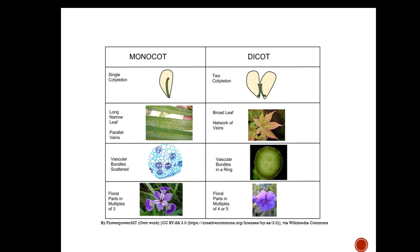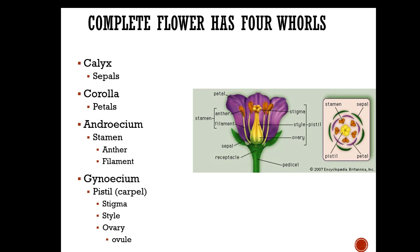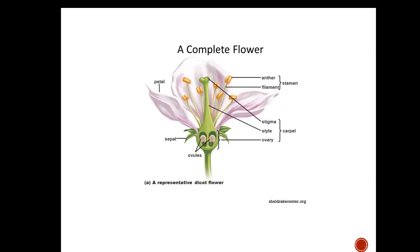A complete flower has four whorls. The whorls are the calyx, corolla, androecium, and gynoecium. The calyx is the collective term for sepals — in this picture you can see sepals are below the flower. The corolla is the collective portion of the petals. The androecium contains the stamens, which consist of an anther and filament. The gynoecium is the pistil or carpel — either term is acceptable — and consists of the stigma, style, ovary, and ovule.